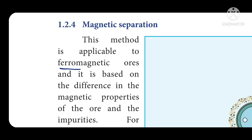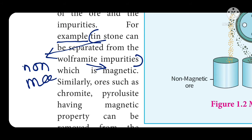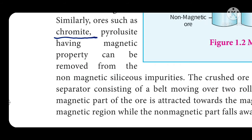Magnetic separation is applicable to ferromagnetic ores and is based on the difference in magnetic properties. Tin stone can be separated from wolframite impurities — wolframite has magnetic character and tin stone has non-magnetic character. Other examples: ores such as chromite and pyrolusite, having magnetic properties, can be removed from non-magnetic siliceous impurities. Both are separated based on the difference in magnetic behavior.